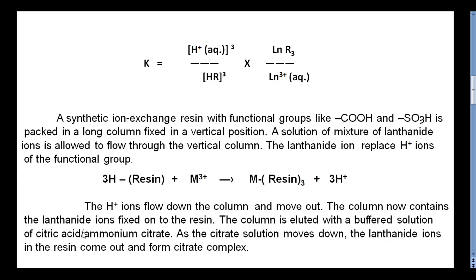The column now contains the lanthanide ions fixed onto the resin. The column is then eluted with a buffered solution of citric acid or ammonium citrate. As the citrate solution moves down the column, the lanthanide ions in the resin come out and form citrate complexes.